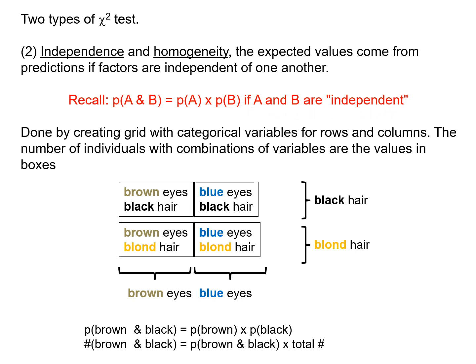The way we're going to do this is we're going to create a grid with categorical variables for rows and columns and put numbers of individuals that have each combination in the boxes. So as an example here we can have a set of rows for hair color, these individuals have black hair, these individuals have blonde hair. Set of columns for eye color, brown eyes, blue eyes. We would have a two by two grid.